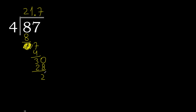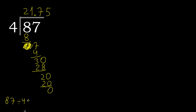There is no number, therefore complete. Always complete with 0. Point is here. 20. 4 multiply by 5 is 20. Subtract 0. Therefore finish. Therefore 87 divided by 4 is 21.75.